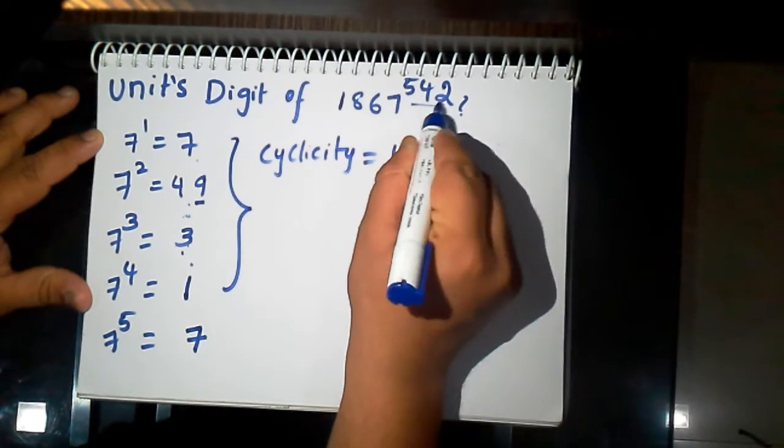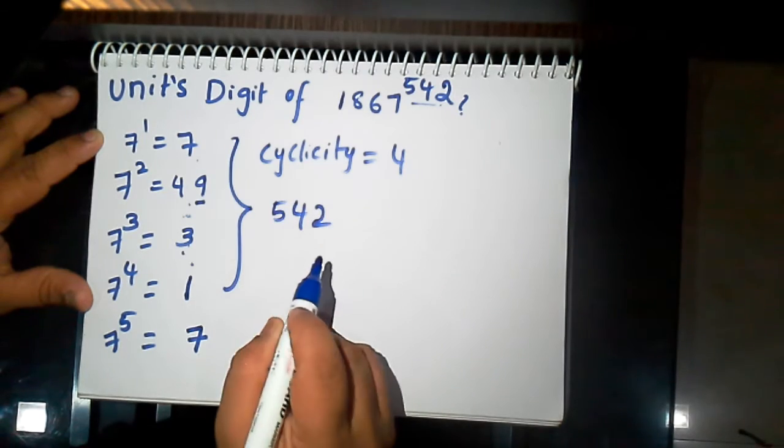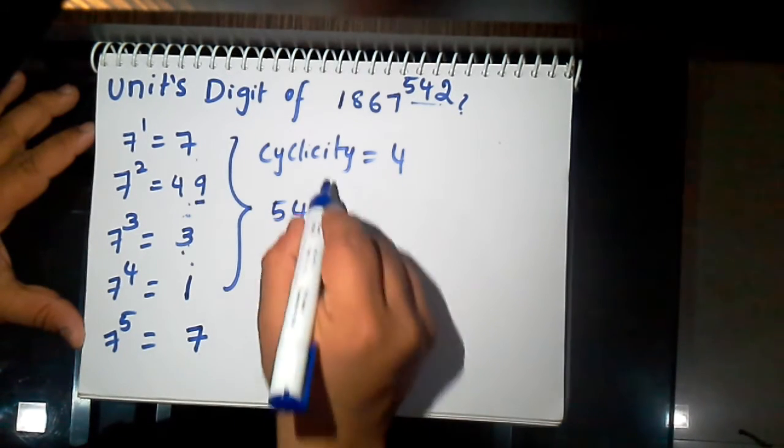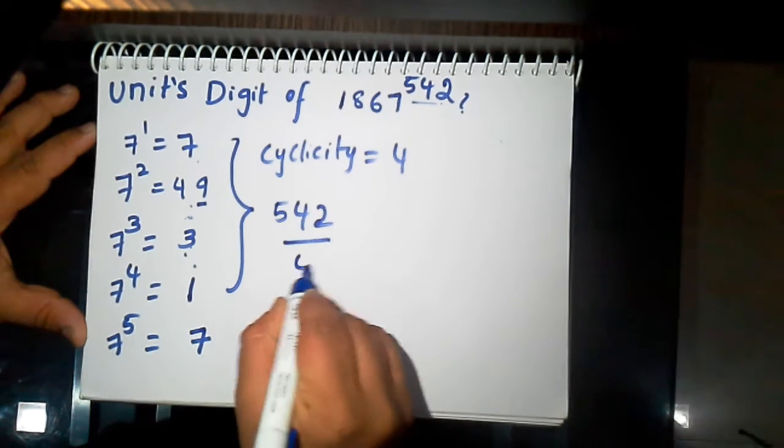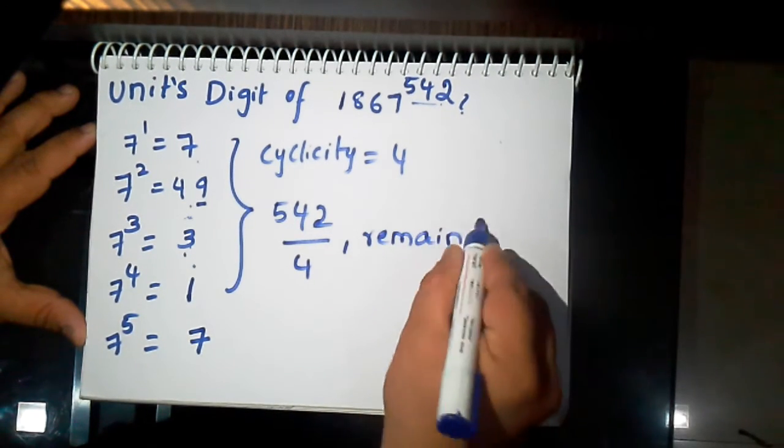Now here the power value is 542. As like previous, we need to divide this power value with the cyclicity value 4. Then we will get the remainder 2.